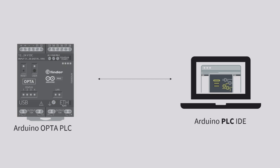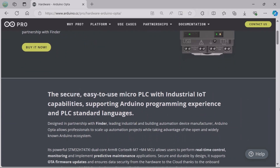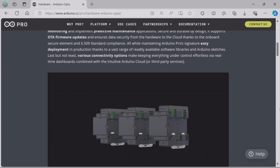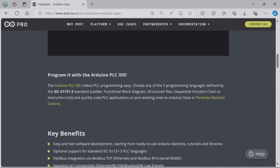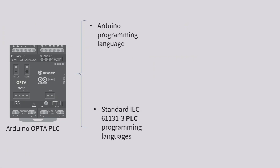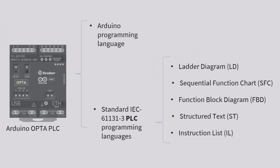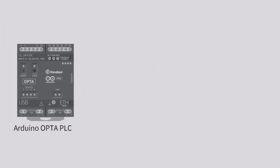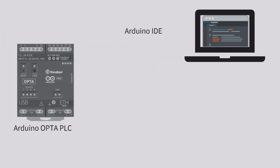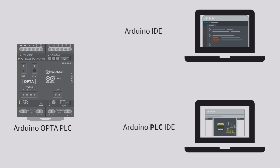Arduino Opta is a micro PLC with industrial IoT capabilities. The Opta PLC device supports both the Arduino programming language — the one with C++ — and the standard PLC programming languages like ladder diagram and function block diagram. You can program Arduino Opta using two software tools: Arduino IDE or Arduino PLC IDE.